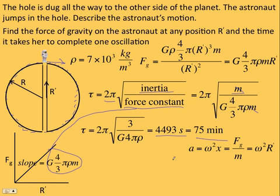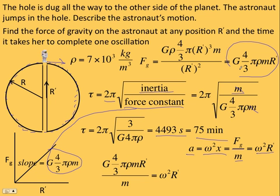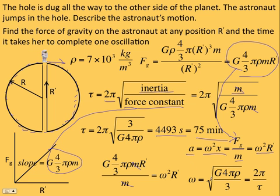There's another way to get the period from simple harmonic motion. The acceleration is the angular frequency squared times the displacement. The acceleration would be the force of gravity over the mass. That equals ω squared, and the displacement instead of x is R. We got the force of gravity from up here. The M goes. So ω would be the square root of G 4π ρ over 3. We know ω is 2π over the period. Solve this for the period, and you get the same thing we had here.